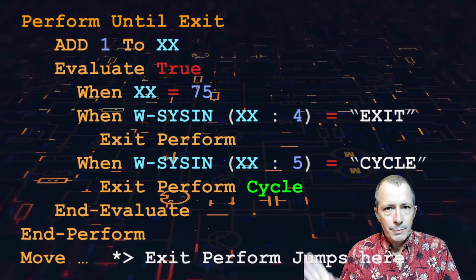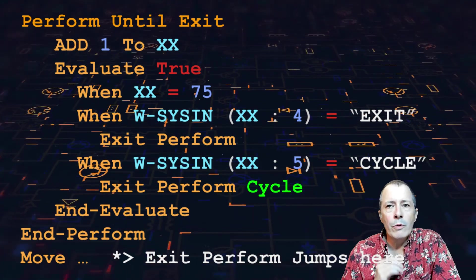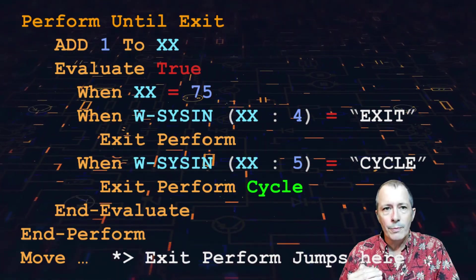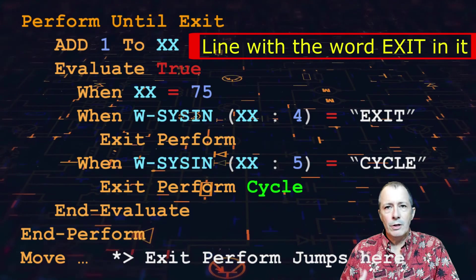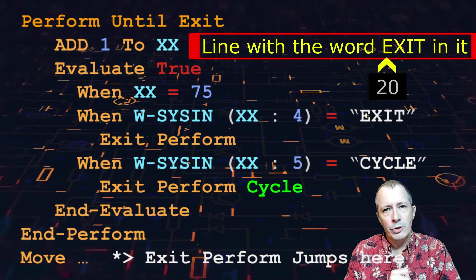This demo loop is processing records from sysin. If the word exit is found somewhere within the record, it leaves a loop. For example, if this loop is processing the following record, the word exit is in position 20.